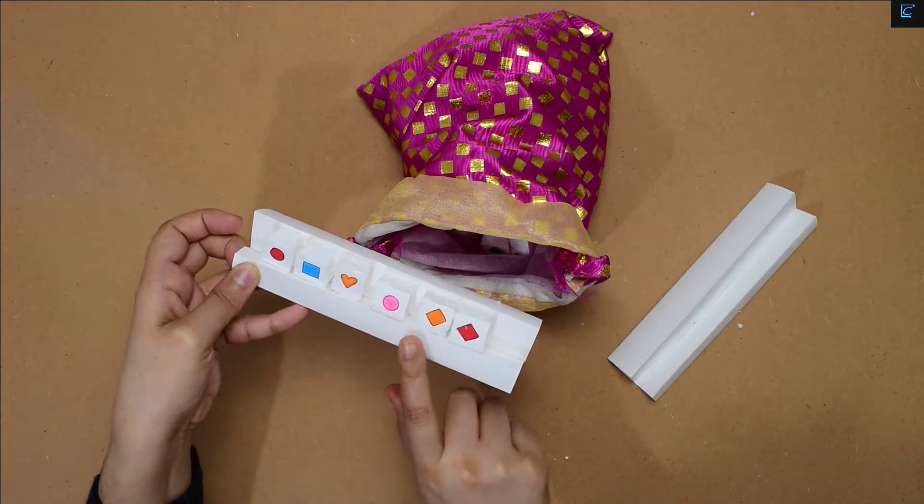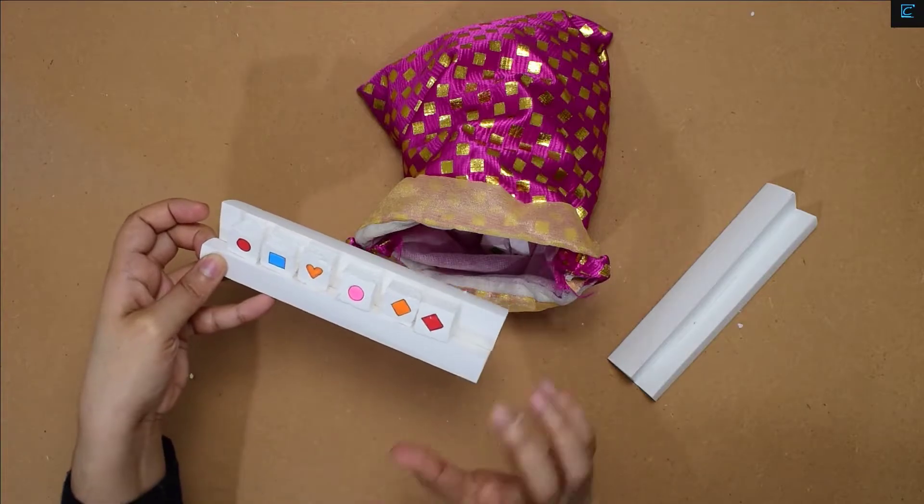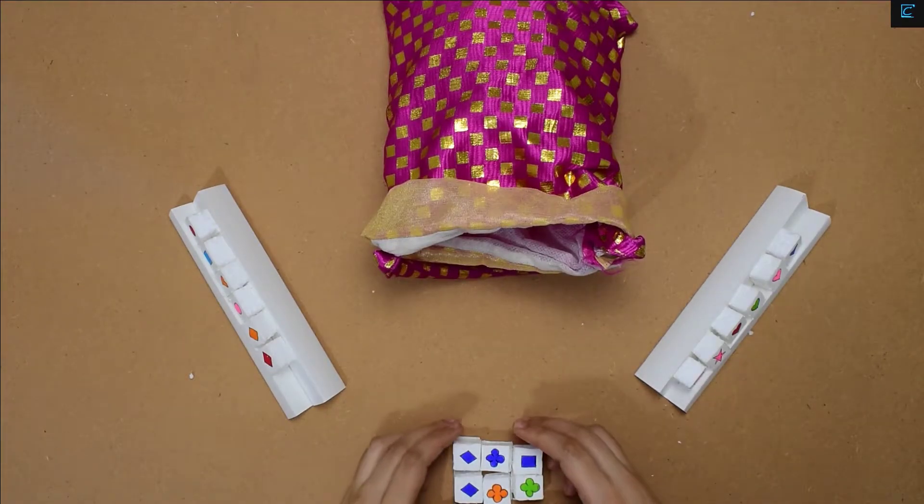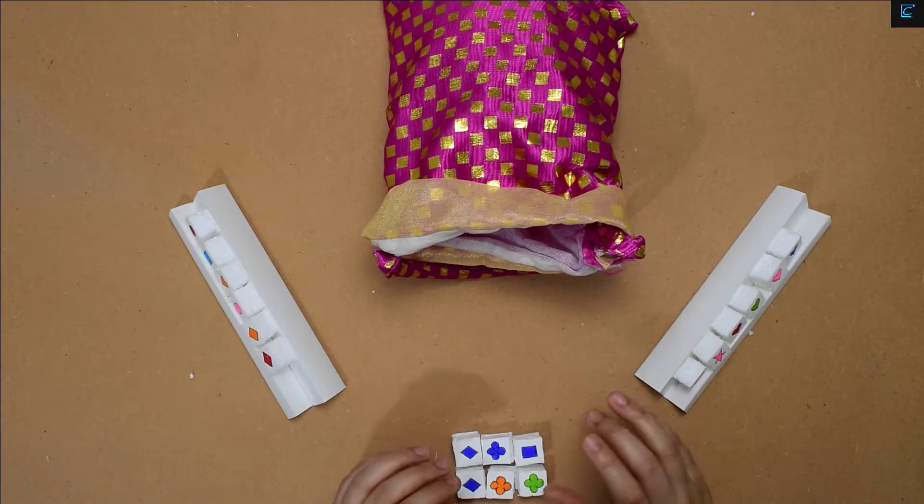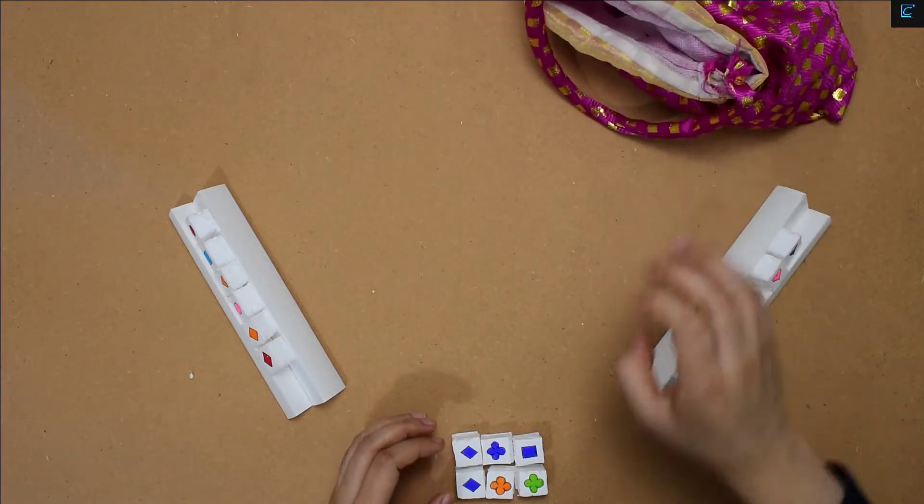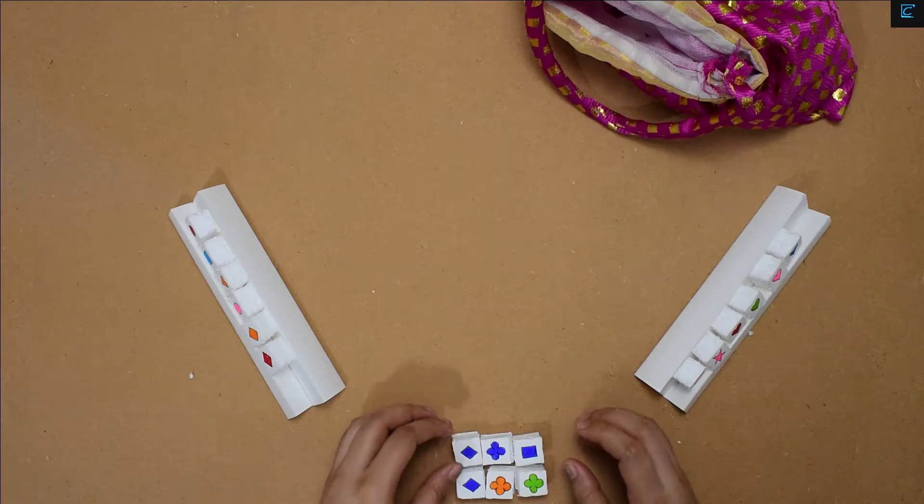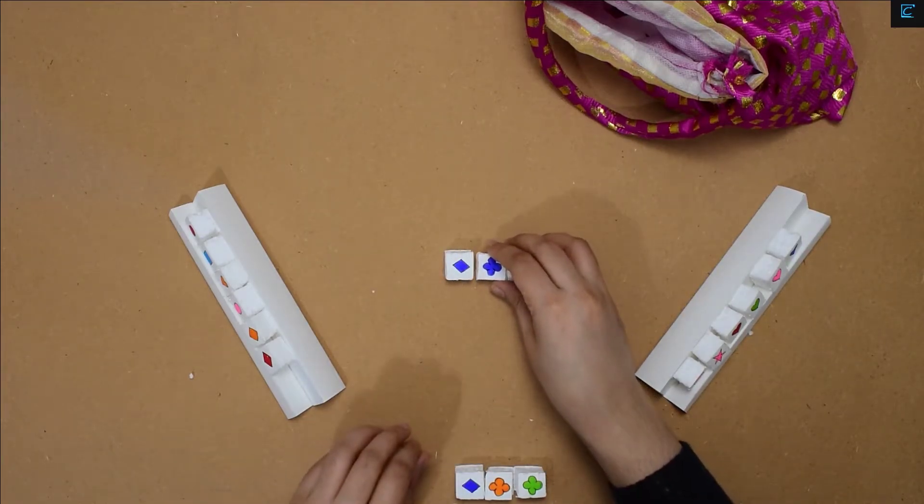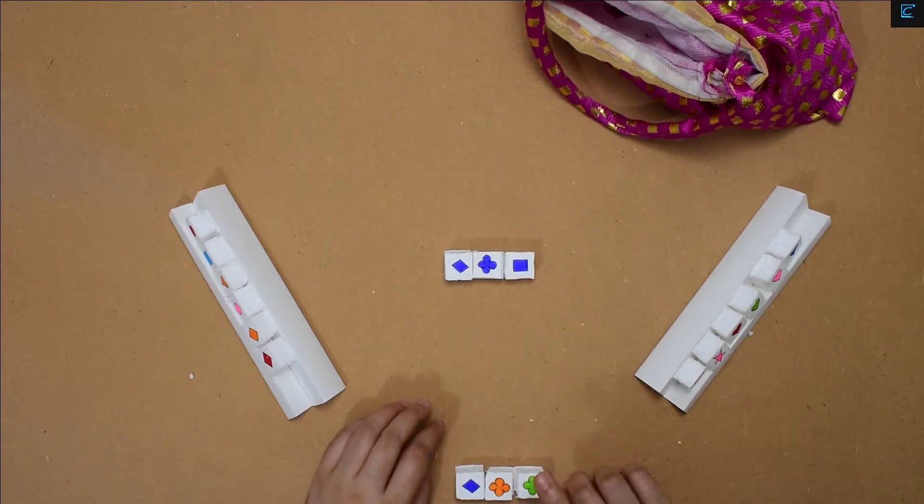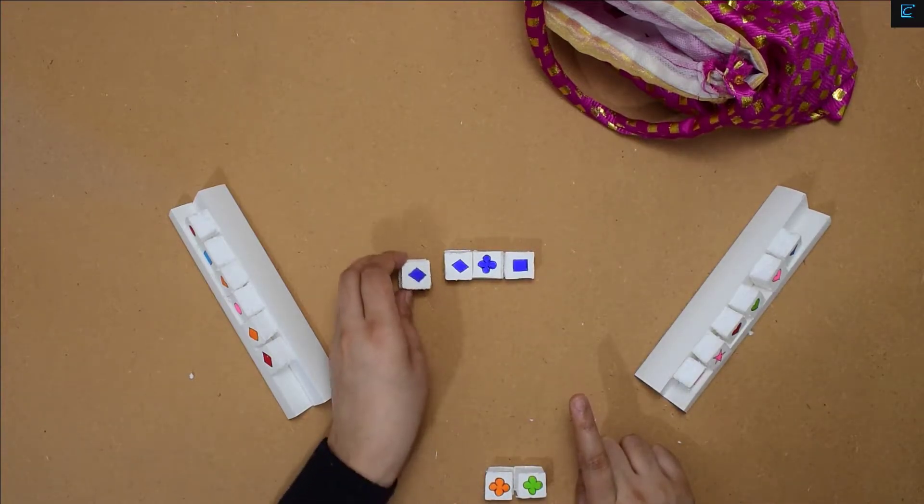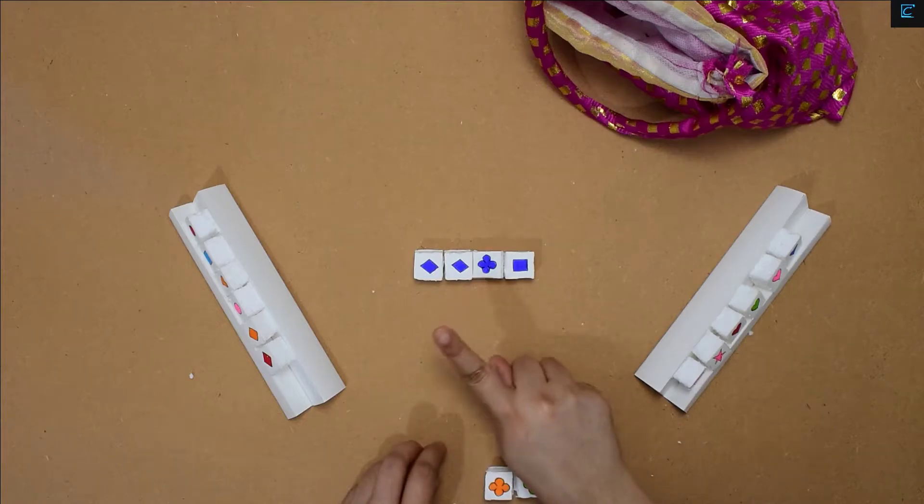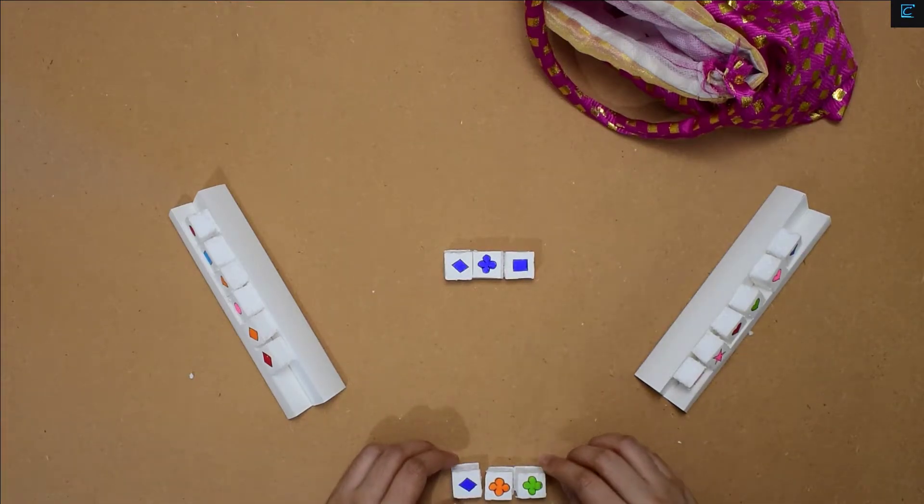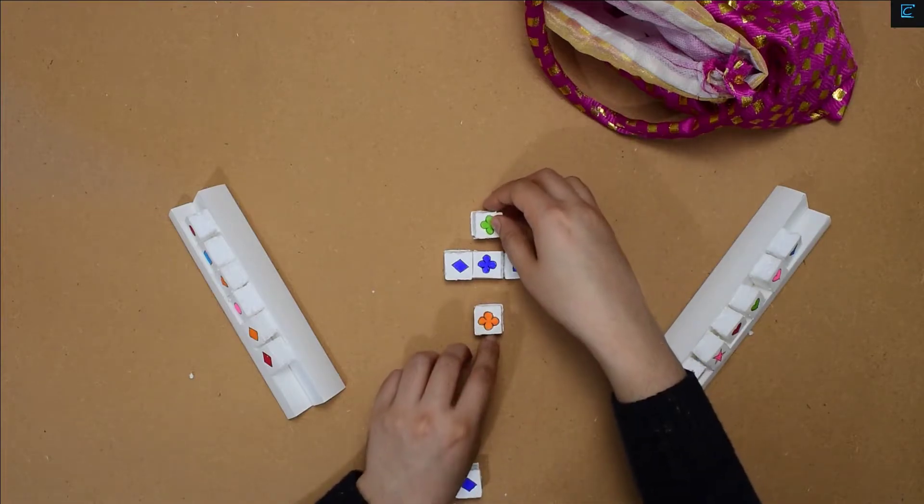During their turn, a player may place one or several tiles on the table. But remember, a player cannot place identical shape and color in the same line. Players can only place same color different shape, and different color same shape.